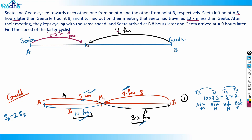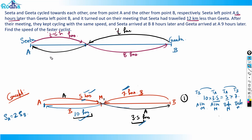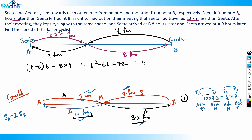After meeting, Sita arrived at B eight hours later, and Gita arrived at A nine hours later. Using the concept: (t − 6) × t = 8 × 9. So t² − 6t = 72, giving t² − 6t − 72 = 0. Solving this quadratic, t equals 12 or −6. Since −6 is not possible, t = 12 hours.